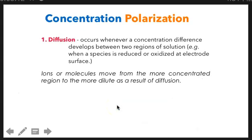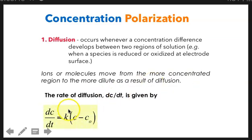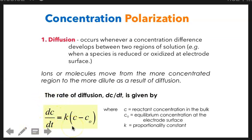So for the diffusion process, like what I have said, it happens whenever a concentration difference develops between two regions of solutions. For example, a species is reduced or oxidized at electrode surface. So that means you'll have a difference, that gradient. Now the rate of diffusion is given by this equation, where C is the concentration - it's a change in concentration per time. And this C is the concentration of reactant in your bulk, like what I have explained. And then C0 is the equilibrium concentration at the electrode surface.